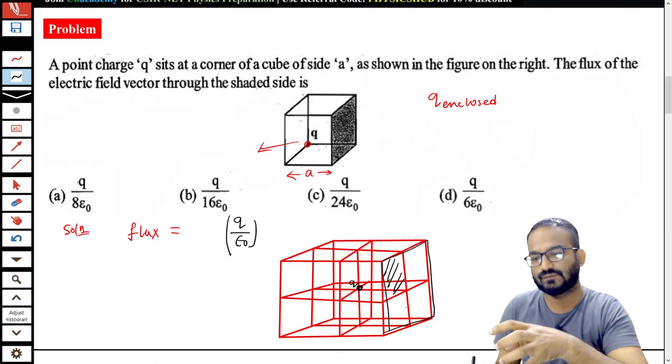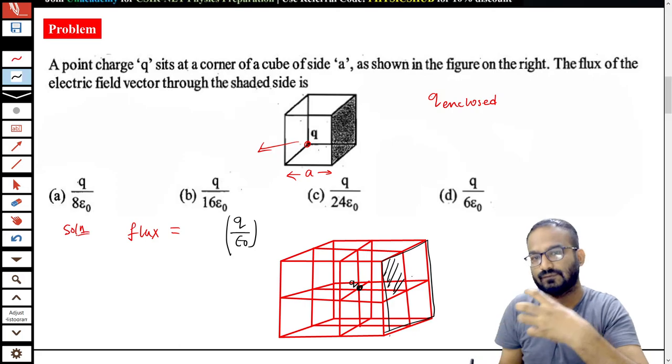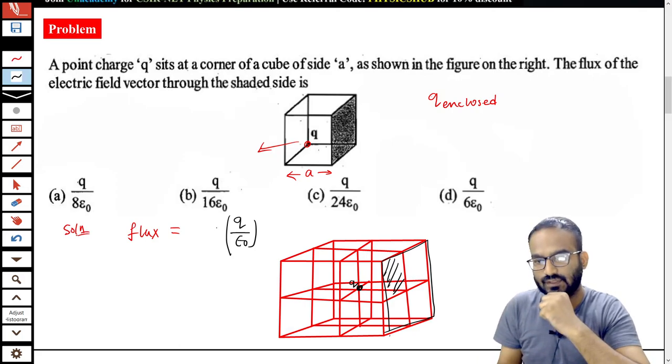This big cube has six faces: 1, 2, 3, 4, 5, 6. This is one of the faces. So if Q by epsilon naught is the total flux coming out of this big cube, what will be the flux coming out of one side? This will be 1/6, right? That is good.